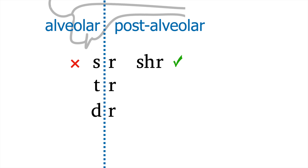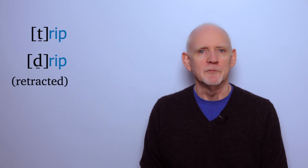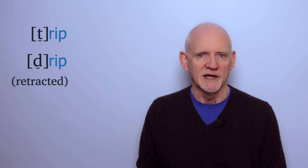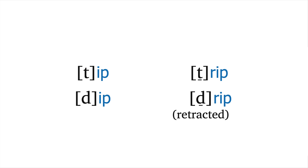So what about TR and DR? We have loads of words where the tongue has to slide quickly from T and D to R, right? 'Try,' 'dry,' 'trip,' 'drip'? Well, not really. If you pay close attention to the way I say 'trip' and 'drip,' you'll notice that I'm changing the T and D, pulling them back to match the following R. Compare the T and D in 'tip' and 'dip.' Tip and drip. Dip, drip, dip, drip.